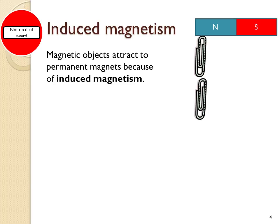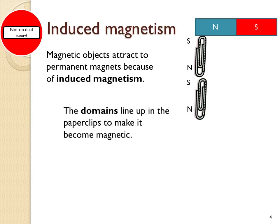Magnetic objects attract to permanent magnets because of induced magnetism. These paperclips are not themselves magnets, but they are made of a magnetic material such as iron. When you bring them near to a magnet, the domains line up in the paperclip temporarily, so it becomes magnetic. A south pole is induced at the top, and this attracts to the north pole. This means that the bottom of the paperclip will be a north pole, and this itself can induce magnetism in another paperclip, making a south pole at the top — and in this way you can get a chain of paperclips hanging.